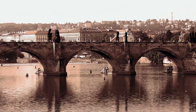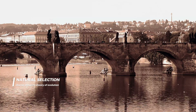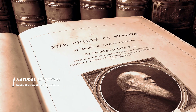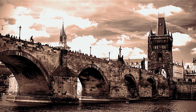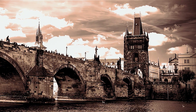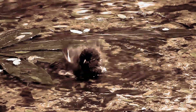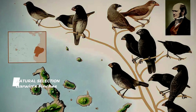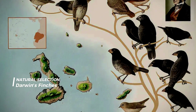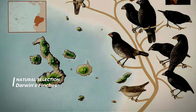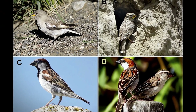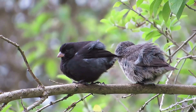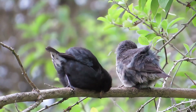In the 19th century, Charles Darwin's theory of evolution through natural selection transformed our understanding of life. At its core is natural selection, a process where traits better suited to the environment become more common over generations. Take Darwin's finches, for example. On the Galápagos Islands, Darwin observed finches with diverse beak shapes, each adapted to different food sources. This variation highlights how natural selection drives specialization and diversification.